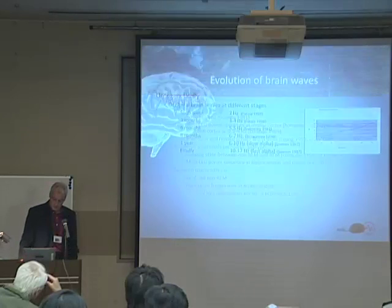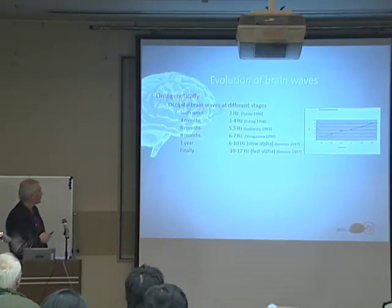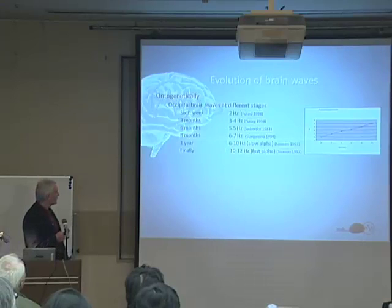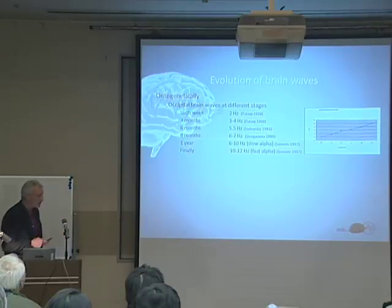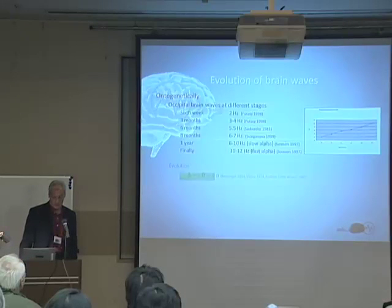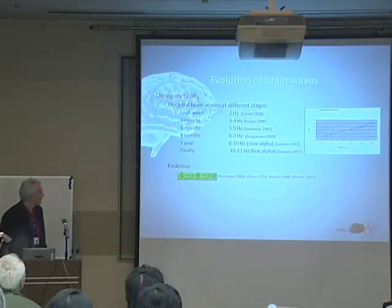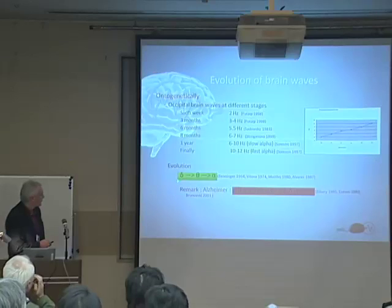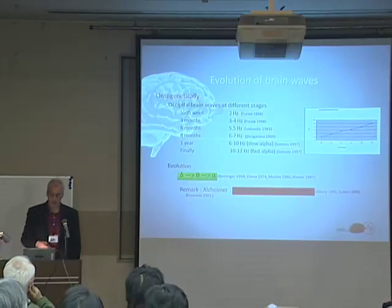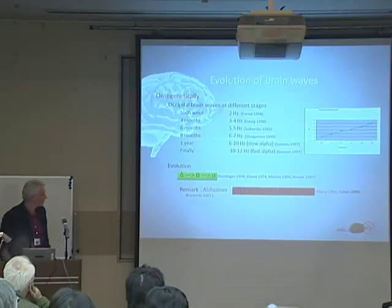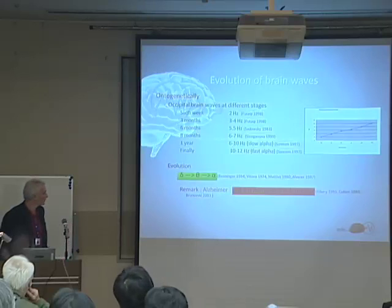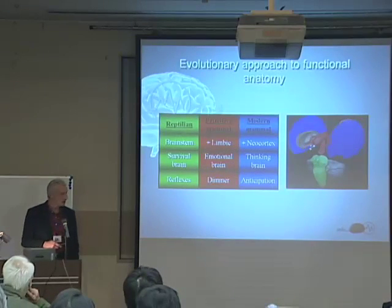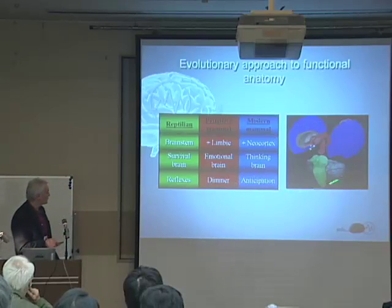If you look at it not from a phylogenetic point of view but from an ontogenetic point of view and look at the increase in processing speed or oscillation rate at the occipital lobe ontogenetically, then you see a progressive increase in oscillation rate. Interestingly, when you look at it in reverse — for example in Alzheimer's — the normal increase in processing speed seems to be reversed, where the higher frequencies tend to fall out and you get more and more processing in lower frequencies.